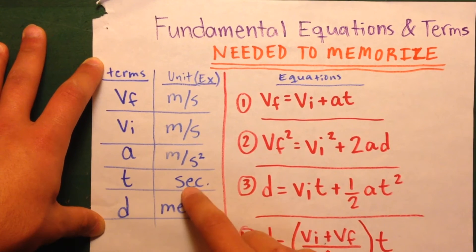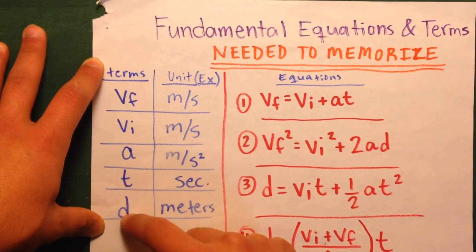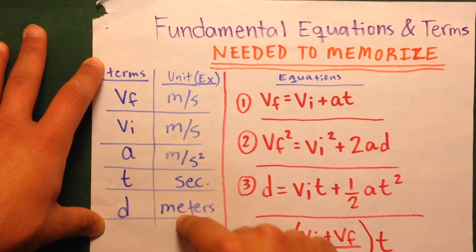And time, an example could be seconds, and a distance, d for distance, is meters.